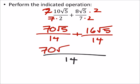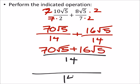So 70 times the square root of 5, plus 16 times the square root of 5, and again it's over 14. I'm just going to add 70 and 16, which gives me 86, and I would multiply that by the square root of 5.